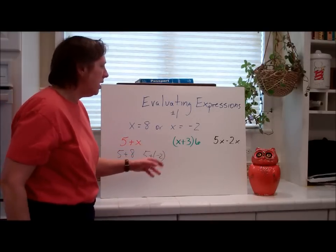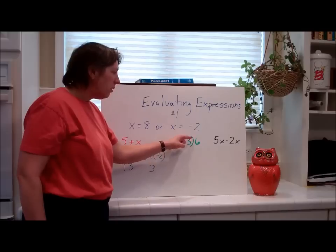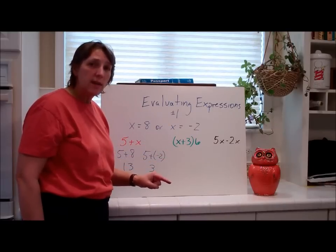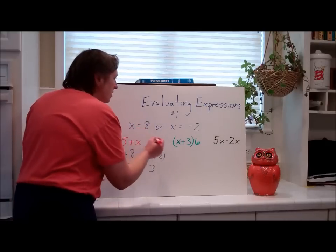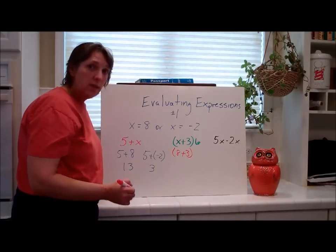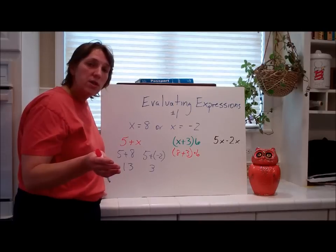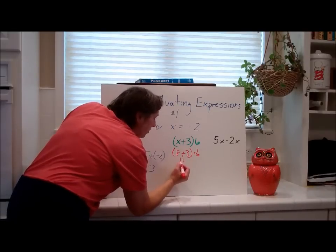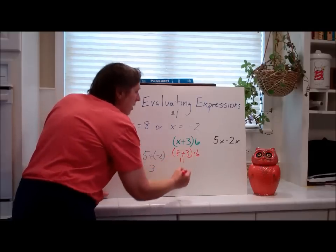The next one: the quantity of x plus 3 — what are they doing here? Multiplying. The quantity of x plus 3 times 6. You have to recognize this. We have to do this twice. We plug in x equals 8, so we write parentheses 8 plus 3, close parentheses, times 6. Then order of operations: simplify inside the parentheses first. 8 plus 3 is 11. Then 11 times 6 is 66. So when x equals 8, the quantity of x plus 3 times 6 equals 66.